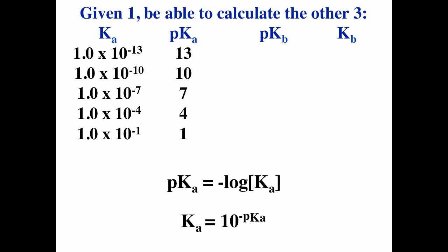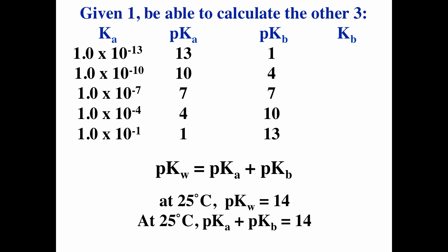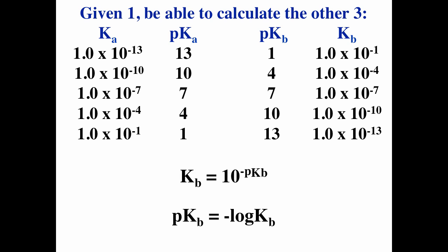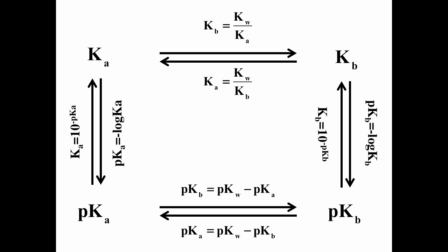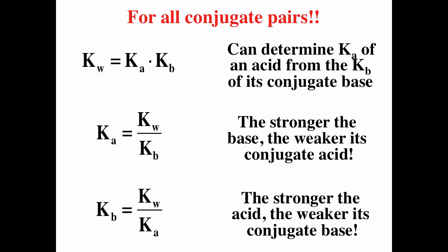Given one of Ka, Kb, Pka, or PkB, you should be able to calculate the other three. If you're given Ka, take the minus log to get Pka. Since Pka plus PkB equals 14 at 25°C, you can find PkB. If you're given PkB and want Kb, take 10 to the negative PkB. For some conversions it's a one-step process — for example, Ka to Kb is just Kw divided by Ka. For others it's a two-step process, such as Ka to PkB: first go Ka to Kb, then Kb to PkB.